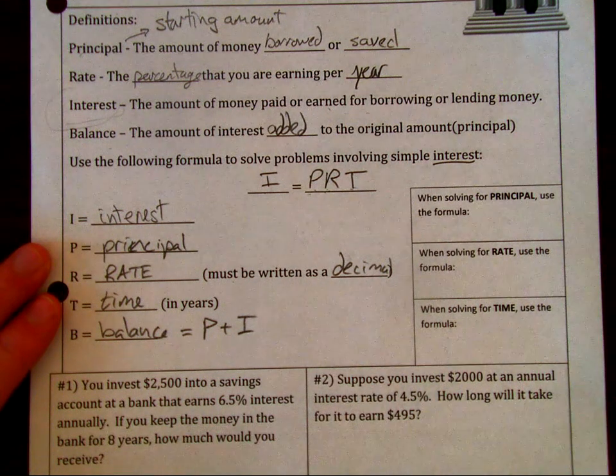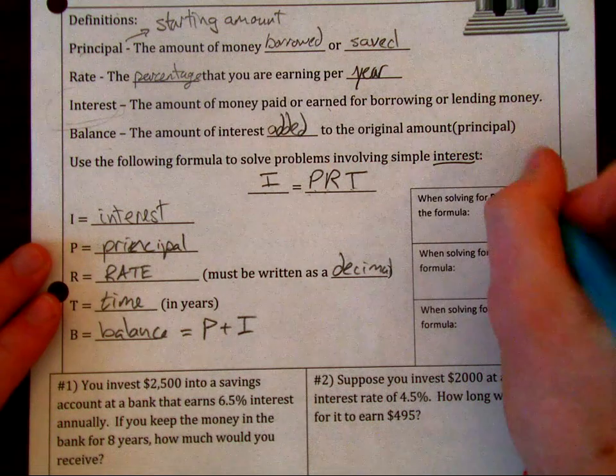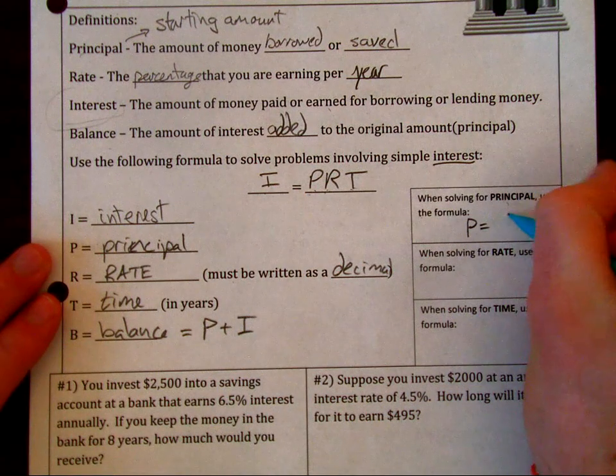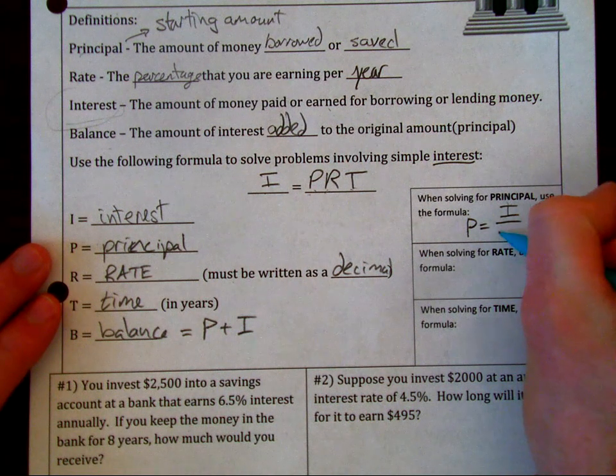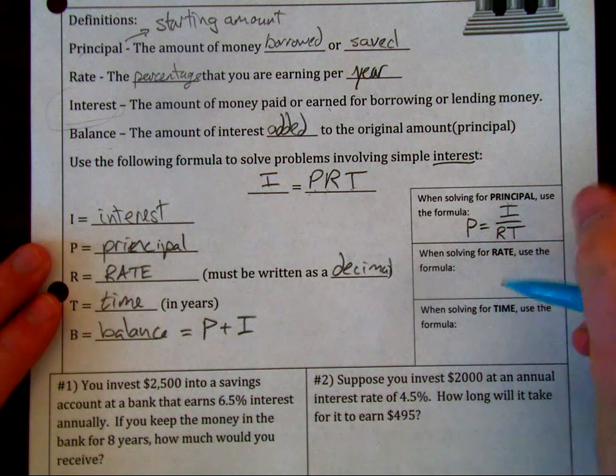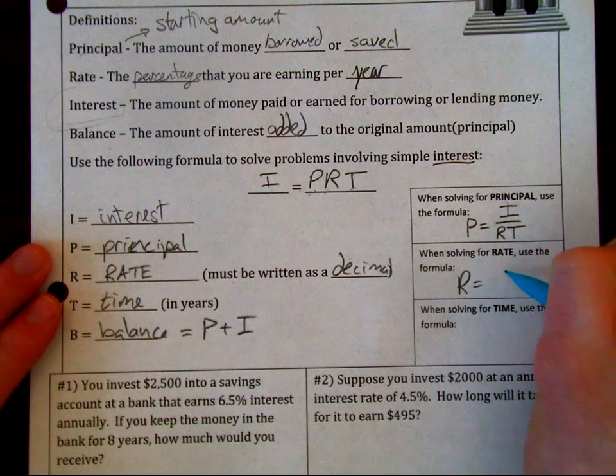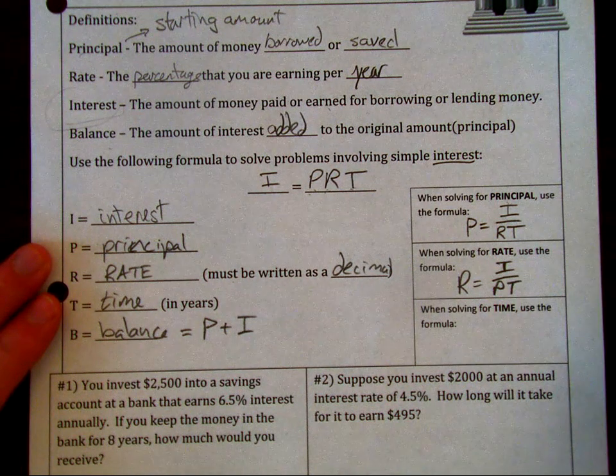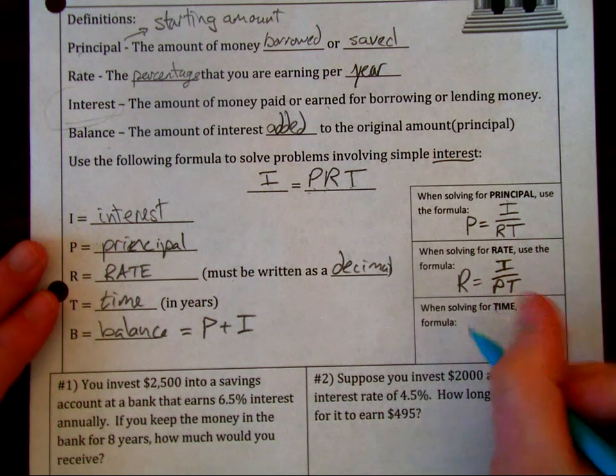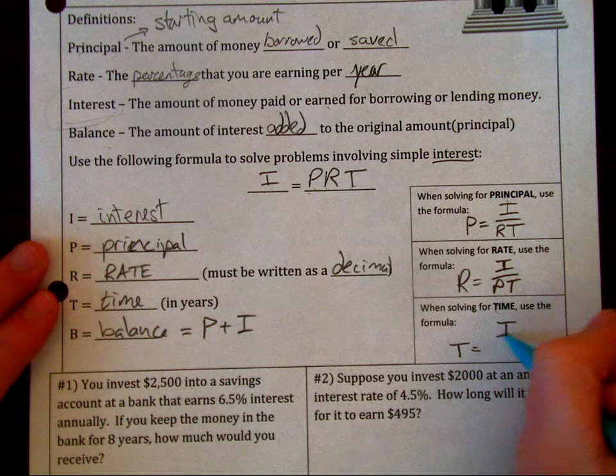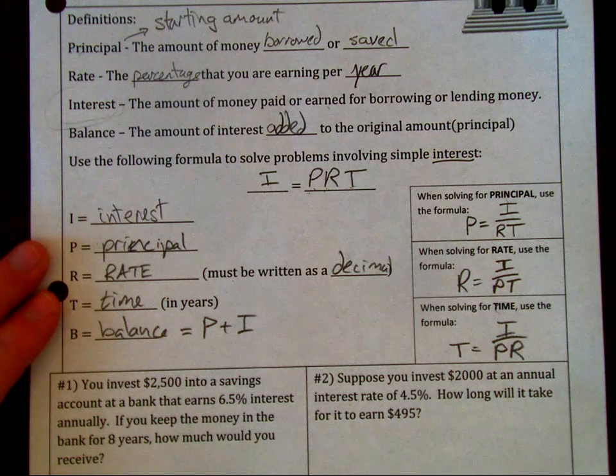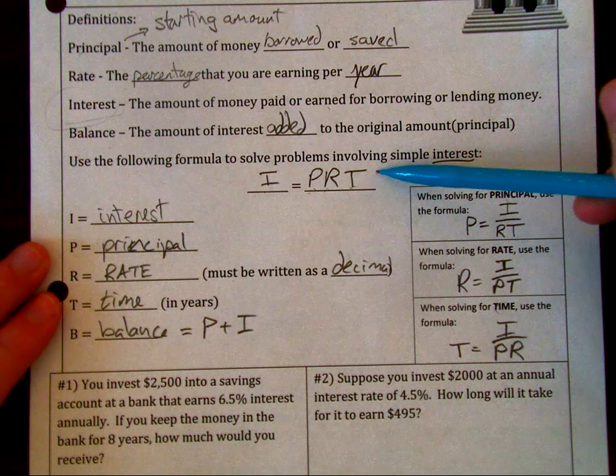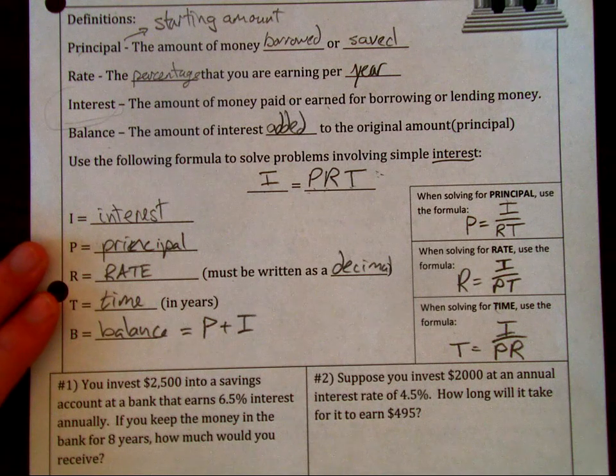What happens if we have to solve for our principle? We'd say P equals I over rate times time. If we were solving for rate, we would say R equals interest over principle times time. If solving for time, T equals interest over principle times rate. These three formulas are based off of this main one in the center, and we're just manipulating them a little bit.